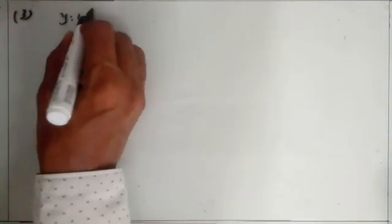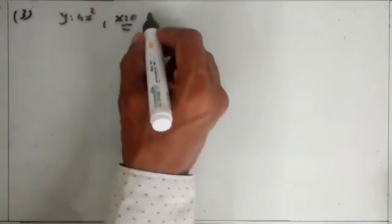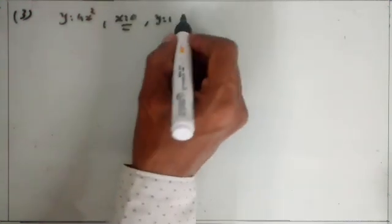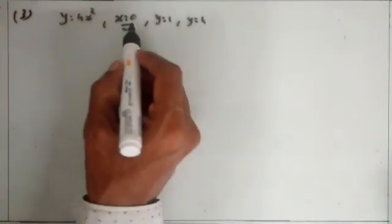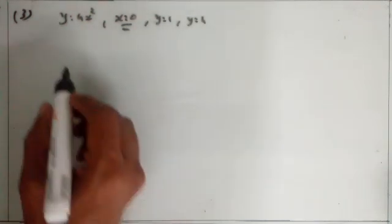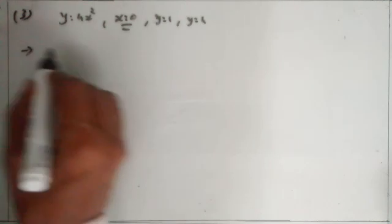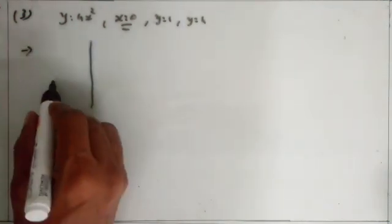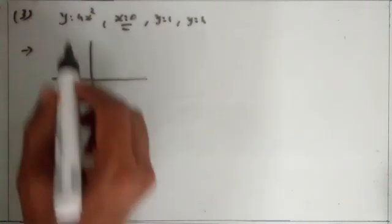Question number 3: find the area of the region lying in the first quadrant and bounded by y is equal to 4x square, line x is equal to 0, y is equal to 1, and y is equal to 4. Here x is equal to 0 is the line given — that is the y-axis. Here y is equal to 4x square is one type of parabola, and we know which type of graph we get for this curve.